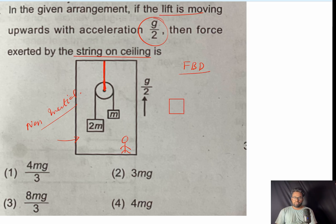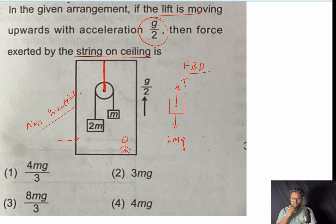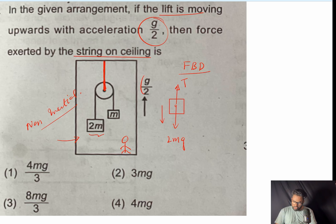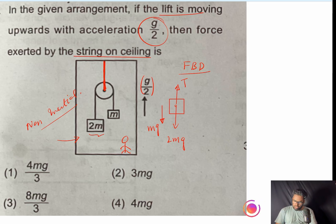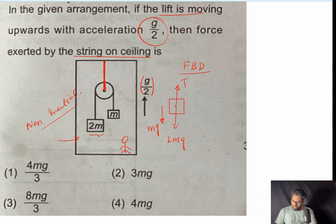In a non-inertial frame, we must account for pseudo force. For the 2m block: downward force is 2mg, upward force is tension T, and pseudo force acts downward — opposite to the direction of acceleration of the frame. The pseudo force for mass 2m with frame acceleration g/2 gives mg downward.